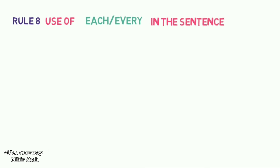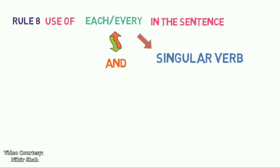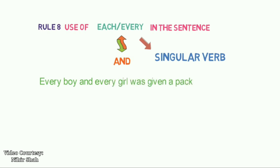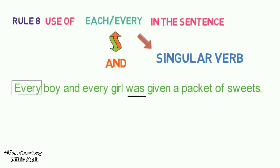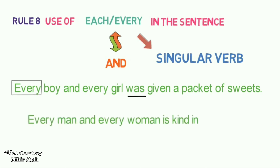Rule 8: Use of 'each' or 'every' in a sentence. Two nouns qualified by 'each' or 'every,' even though connected by AND, require a singular verb. For example: 'Every boy and every girl was given a packet of sweets.' We use 'WAS' because the word 'every' is used. Another example: 'Every man and every woman is kind in that family.' We use 'IS' because 'every' is used in the sentence.